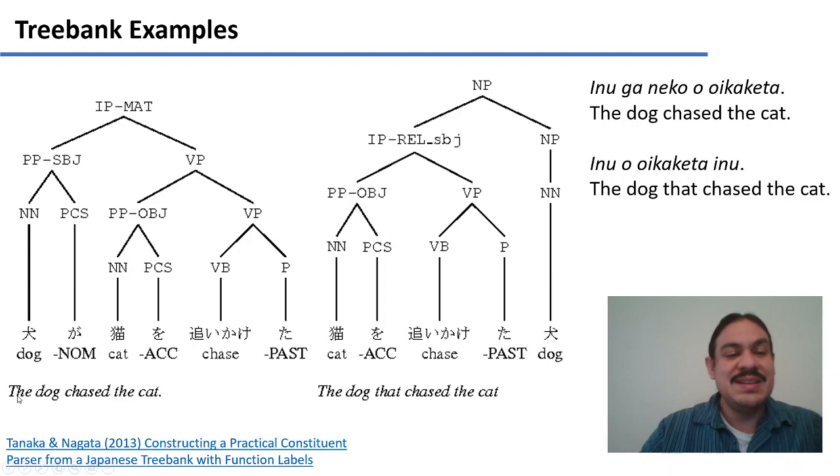These are examples from Japanese. The dog chased the cat. And the dog that chased the cat. And again, we have NPs, VPs, other nouns, and so forth.